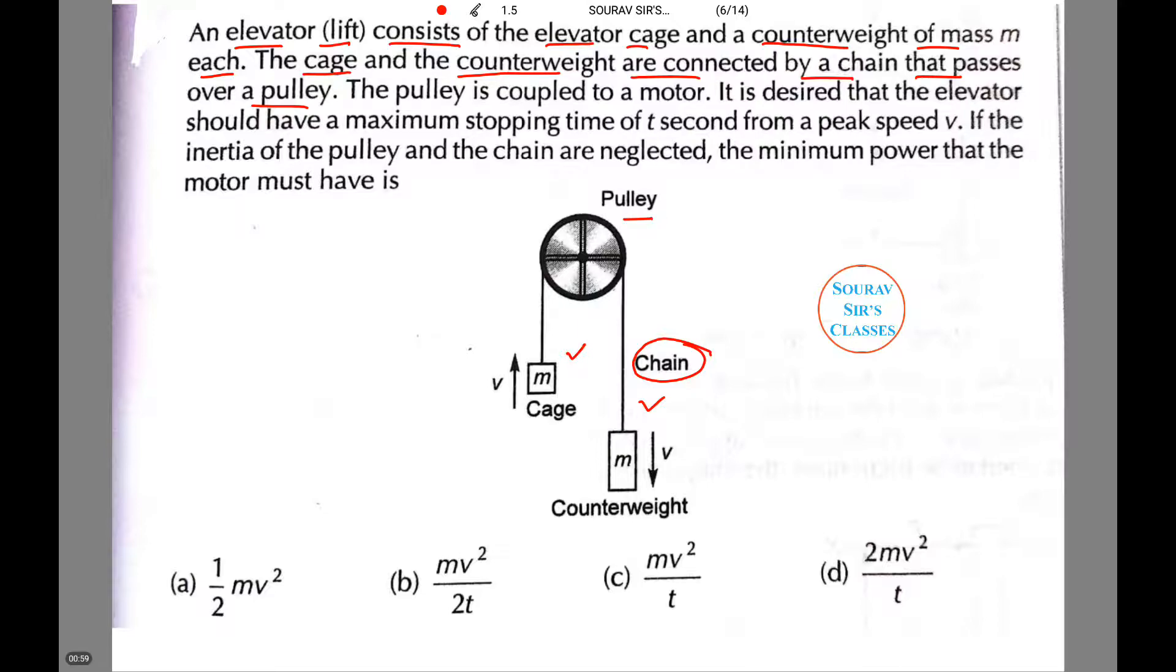The pulley is coupled to a motor. It is desired that the elevator should have a maximum stopping time of t seconds from a peak speed v. If the inertia of the pulley and the chain are neglected, the minimum power that the motor must have is—and we have four options and we have to pick the most appropriate one.